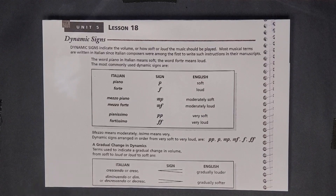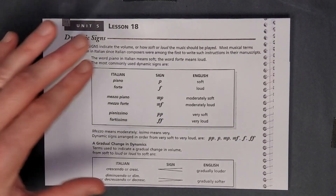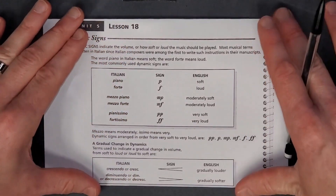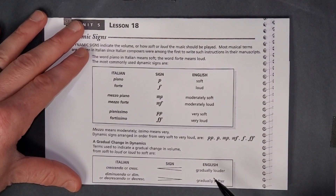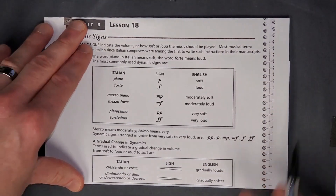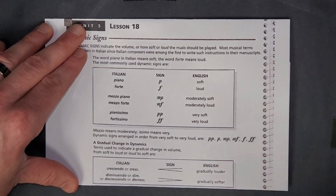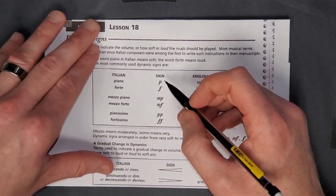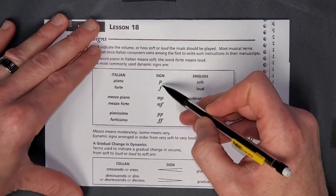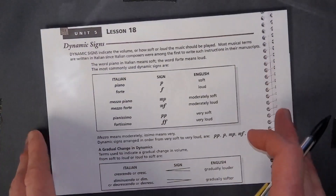Before getting into the exercise, just know that as a musician, dynamics are hugely important. When you see these dynamic markings on the page, make sure you pay really close attention to them. When I was first studying music, a lot of times I didn't think the dynamics were super important — I thought if I got the note and the rhythm, that's great. But any great musician is going to pay super close attention to these dynamic markings. Okay, let's flip over to the exercises.